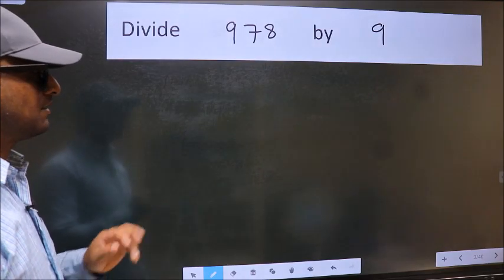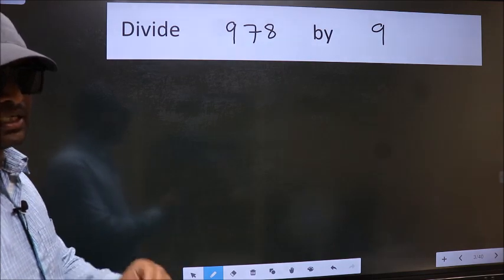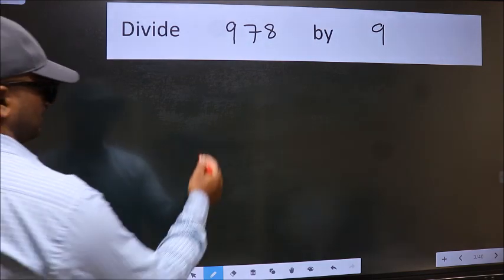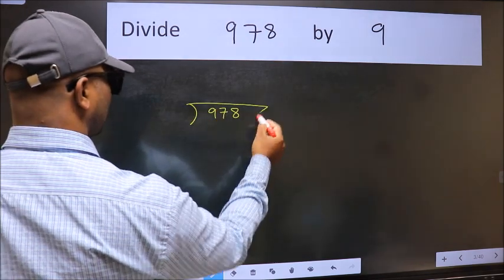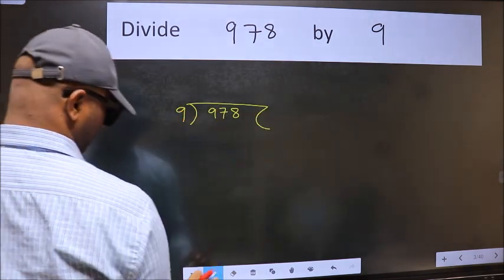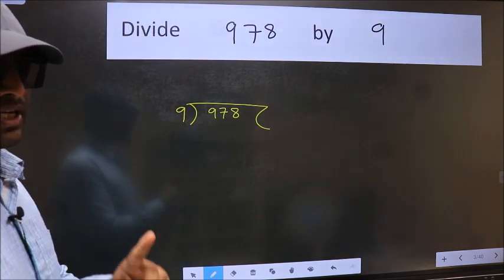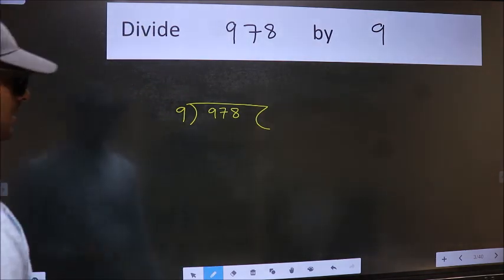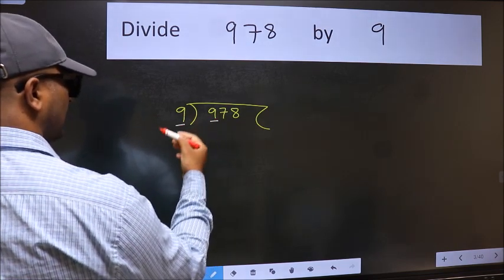Divide 978 by 9. To do this division, we should frame it in this way: 978 here and 9 here. This is your step 1. Next, here we have 9 and here 9. When do we get 9 in 9 table?